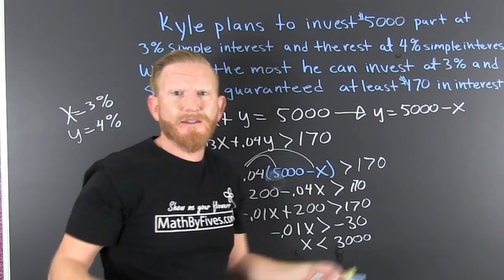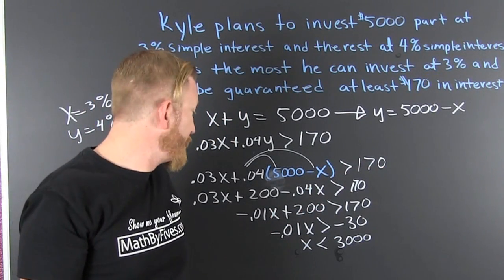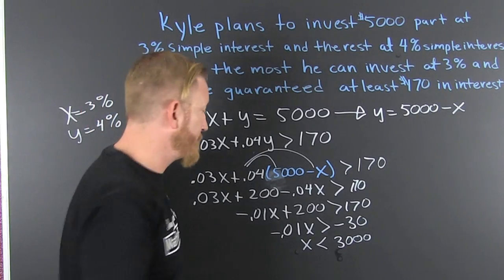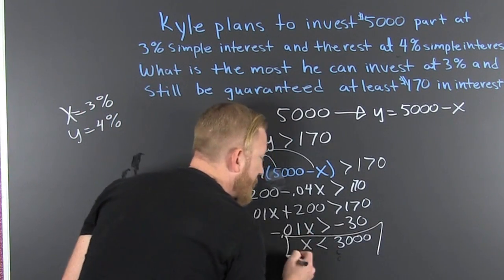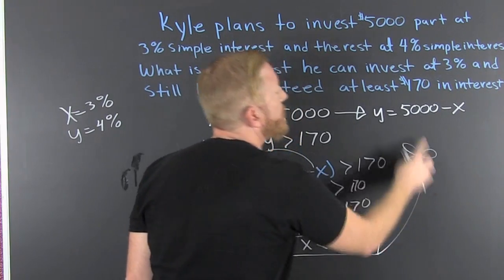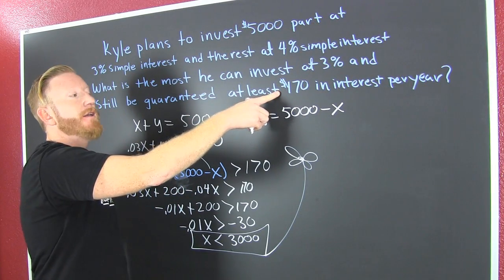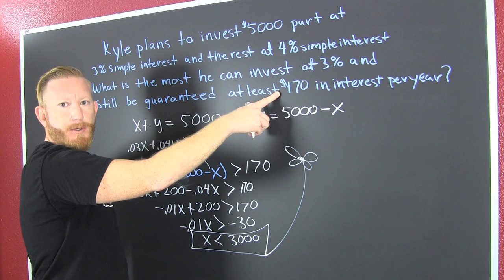So yeah, it turns out I was wrong at the time I thought it was wrong. He needs to invest no more than $3,000 in 3% in order to get $170 in interest per year.